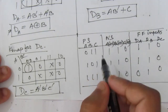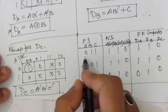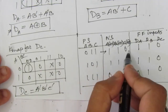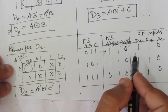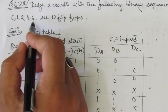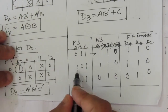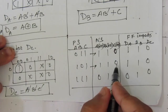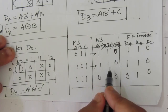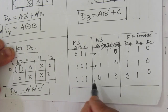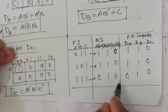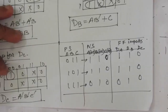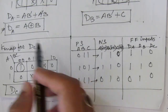Now we can verify: if by any noise signal the counter lands in unused state 3 (0,1,1), the next state will be 1,1,0 — that is 6, which is a used state. Similarly, if the counter lands in unused state 5 (1,0,1), it will go to next state 1,1,0 — that is also 6, a used state. So we need not do any kind of self-correction.